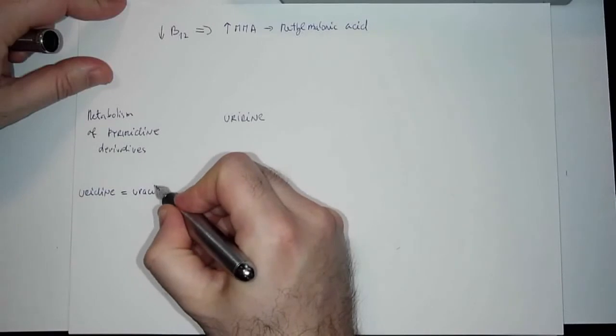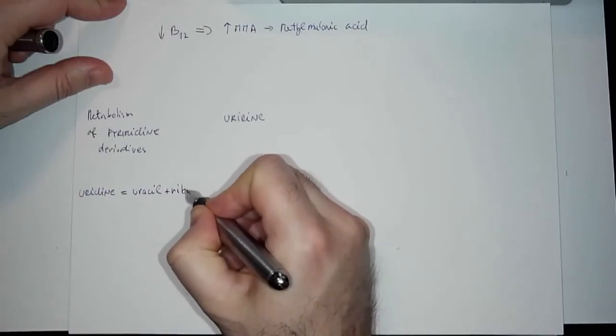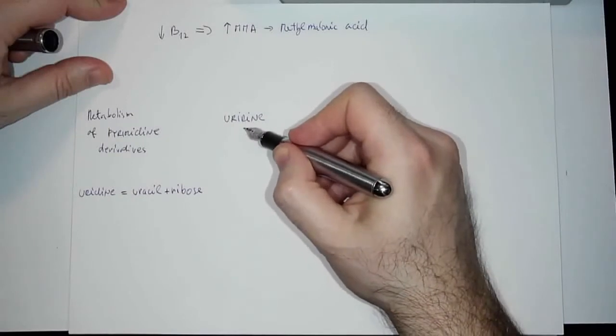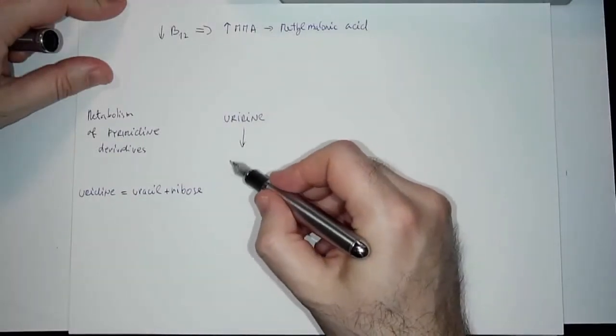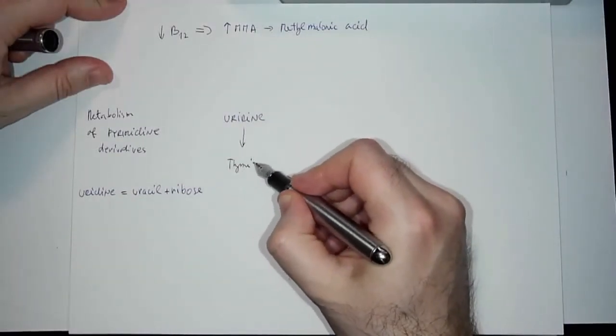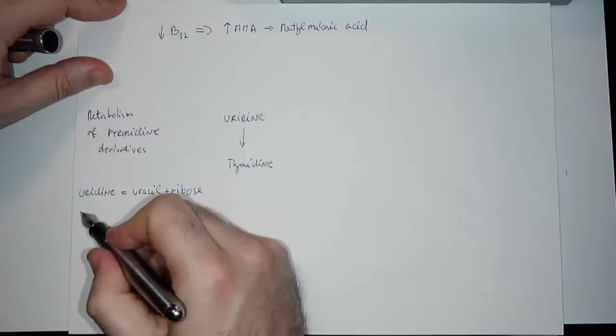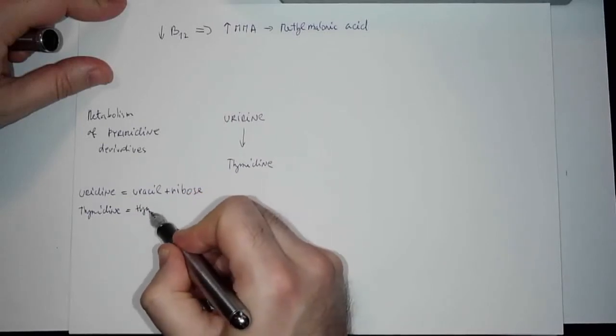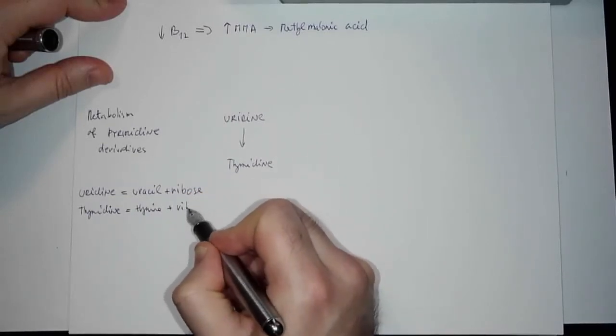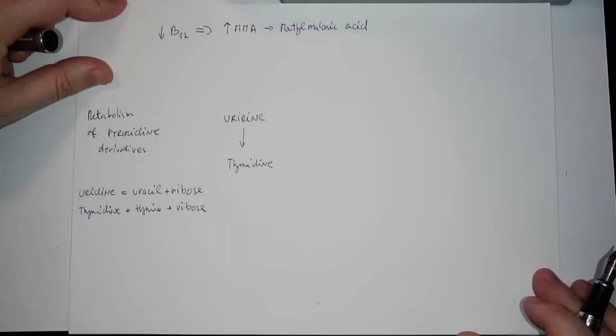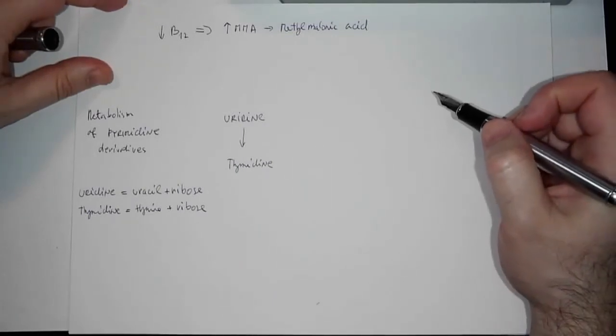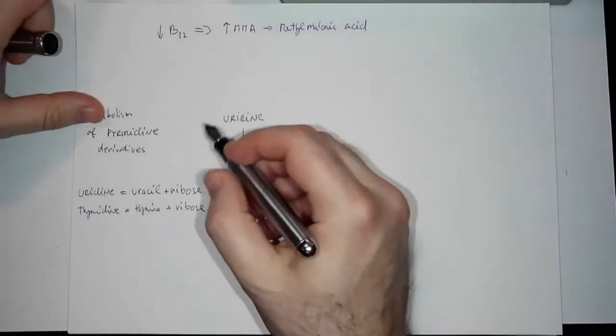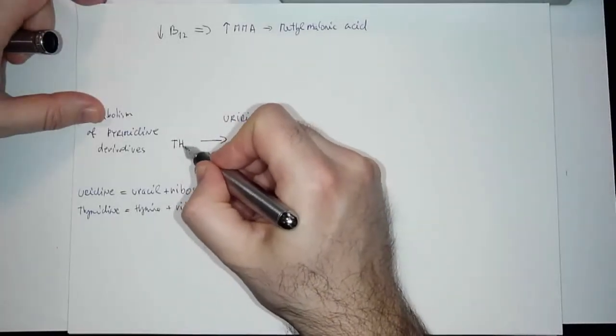The change of uridine to thymidine—thymidine is nothing else than thymine plus ribose—this conversion is done by tetrahydrofolate (THF), so folate.